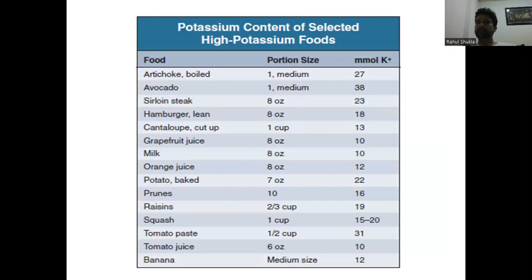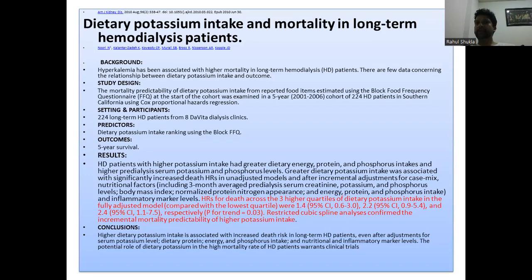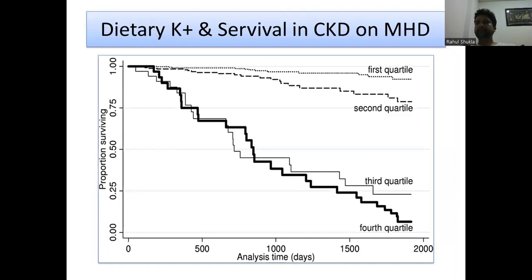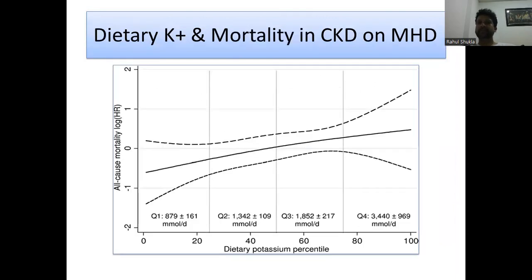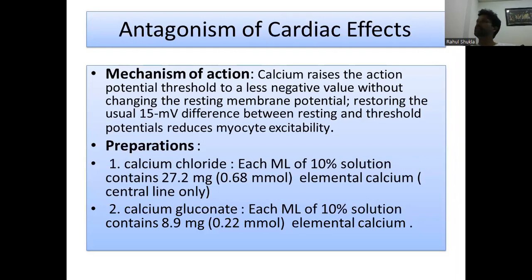High-potassium foods to avoid include avocado, hamburger, milk, orange, potato, prunes, raisins, tomato, and banana. A study by Noori et al., published in the American Journal of Kidney Disease, found that high potassium intake was associated with increased death rates in long-term hemodialysis patients even after adjustment for serum potassium and dietary protein, confirming the relationship between dietary potassium and mortality in CKD.